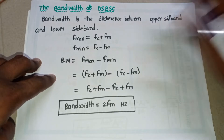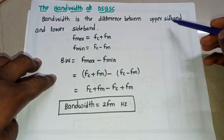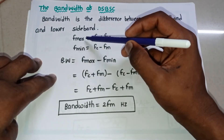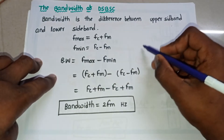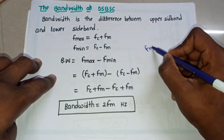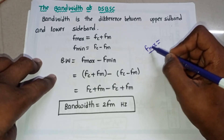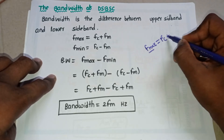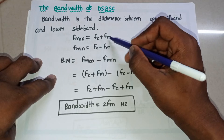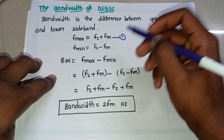Bandwidth is the difference between the upper sideband and the lower sideband. The upper sideband has the maximum frequency, f_max, which is nothing but the carrier frequency fc plus the message frequency fm. This is equation number one.